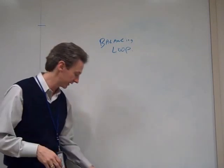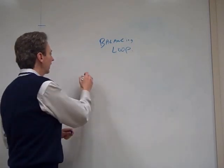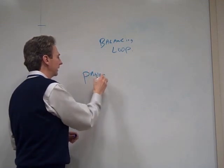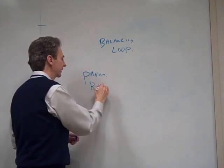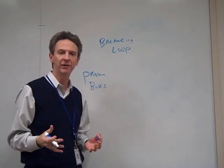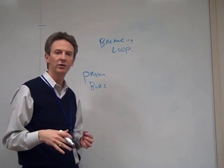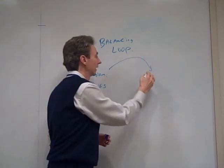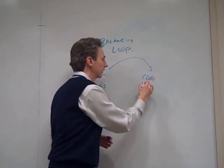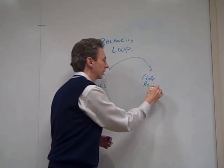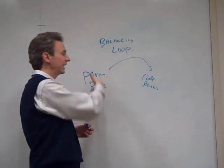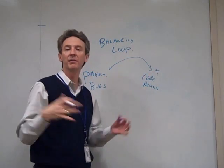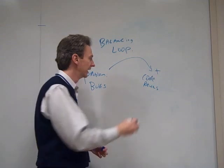Let me describe a balancing loop first. Let's say your problem is that you have a lot of bugs in your software. You decide to solve that problem by instituting code reviews — that's your solution. An increase in number of bugs causes you to increase the number of code reviews that you require your team to do.